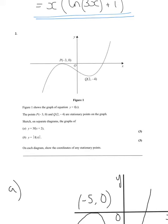So question 2 was a transformation question. We're given the graph of f(x) and we're given a maximum point at (-3, 0), a minimum point at (2, -4) and the shape of it.